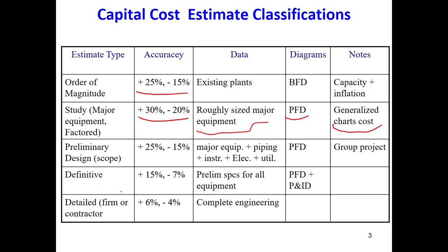We can go into a little more detail by doing sizing of different major equipment, and doing some calculations for piping and instrumentation. This is a preliminary design. It still has a high amount of error, or low accuracy, between minus 15 to plus 25 percent.